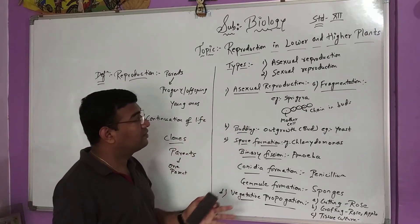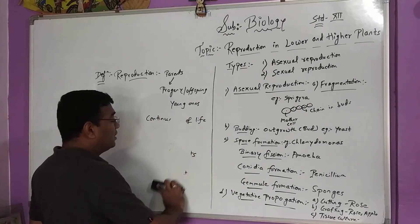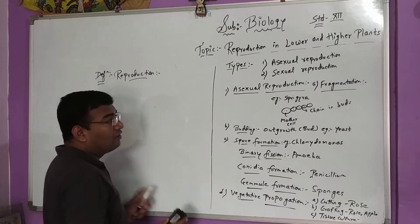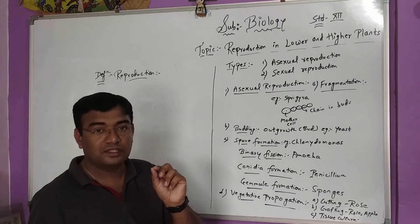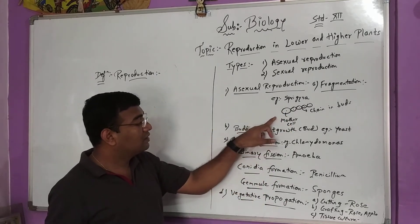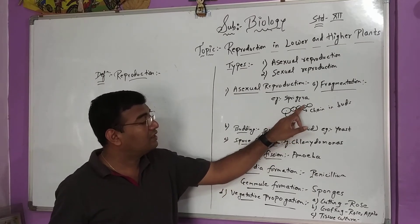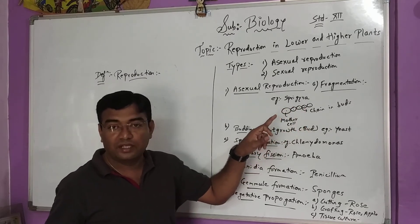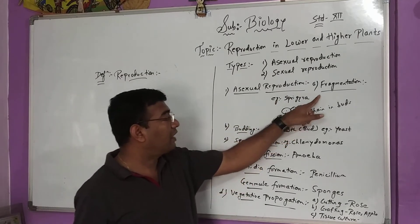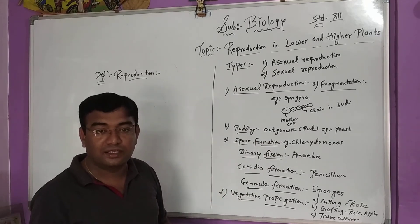Asexual reproduction has many types. The first type is fragmentation. What do we mean by fragmentation? Fragmentation means breaking into smaller pieces. For example, Spirogyra — Spirogyra's mother cell starts developing a chain. The mother cell develops one, then the next, then the next, forming a chain, and it keeps on multiplying. This is one good example of fragmentation. The example of fragmentation is Spirogyra, which is nothing but an algae.